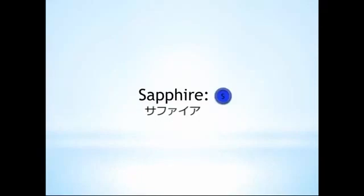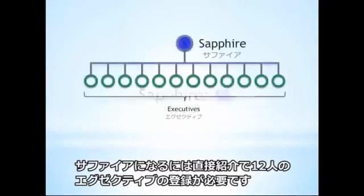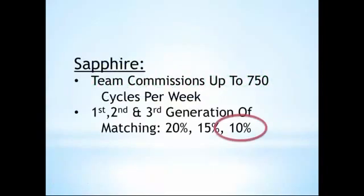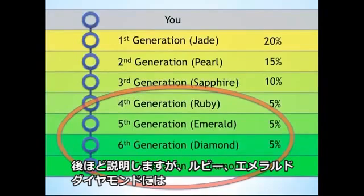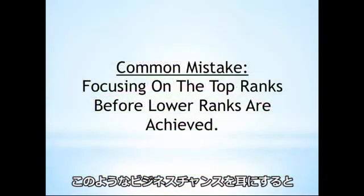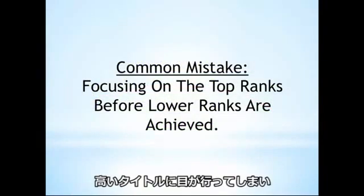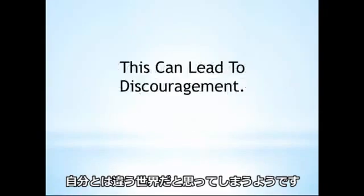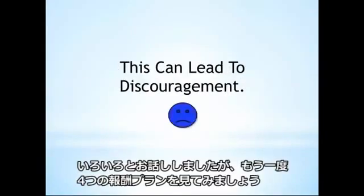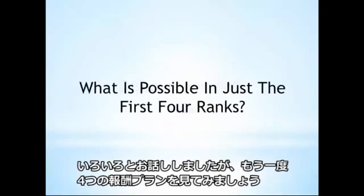The next rank is Sapphire. To become a Sapphire, you must have personally enrolled 12 executives, which rewards you with a third generation of matching bonuses at 10%. The Ruby, Emerald, and Diamond ranks do have some volume-based requirements, but we'll cross that bridge when we get there. One mistake many people make is focusing on the highest ranks first and getting discouraged. Let's go back and look at what can be accomplished within just the first four ranks of the Jeunesse Compensation Plan.